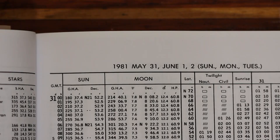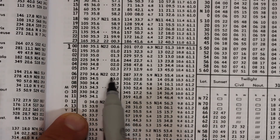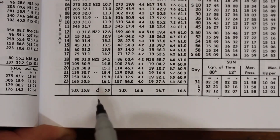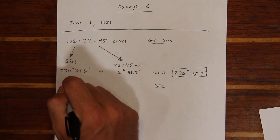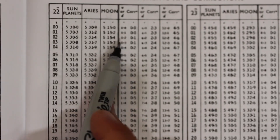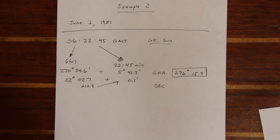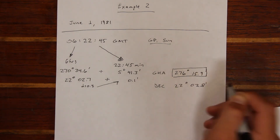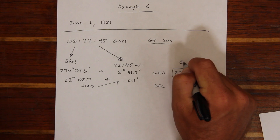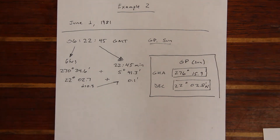For declination, we look for the date in question and come up with a whole hourly figure of 22 degrees 02.7 north. We pull out the D number from the bottom of the Nautical Almanac, then look in the increments and corrections pages for 22 minutes and come up with a D correction of 0.1. Adding these two figures together we get a total declination of 22 degrees 02.8 minutes north. We've now determined the exact position of the Sun: the GHA of the Sun is equivalent to its longitude and the declination of the Sun is equivalent to its latitude.